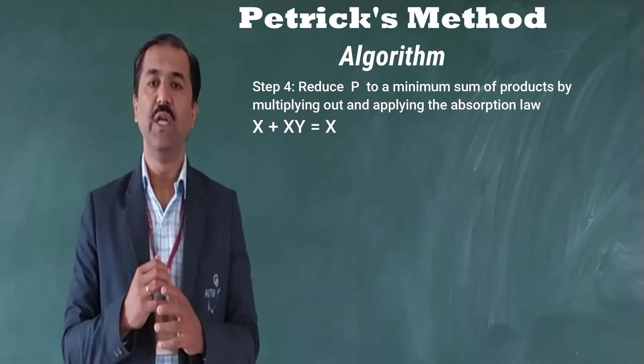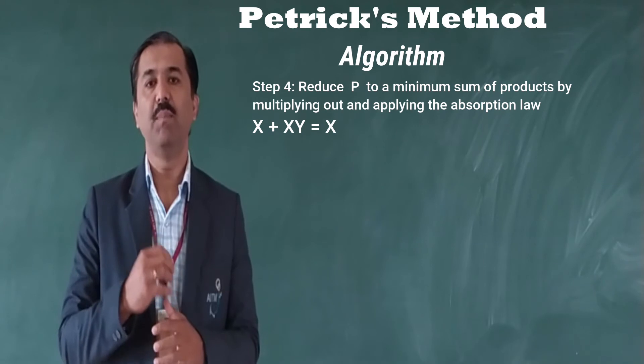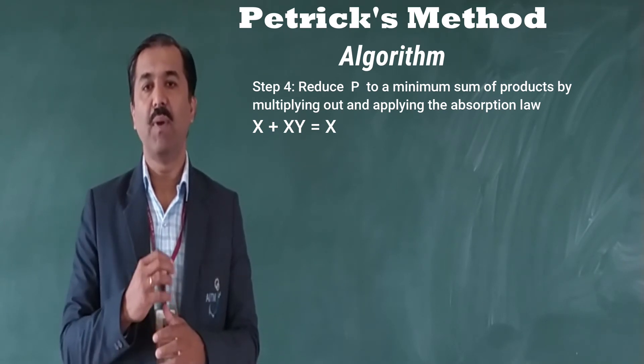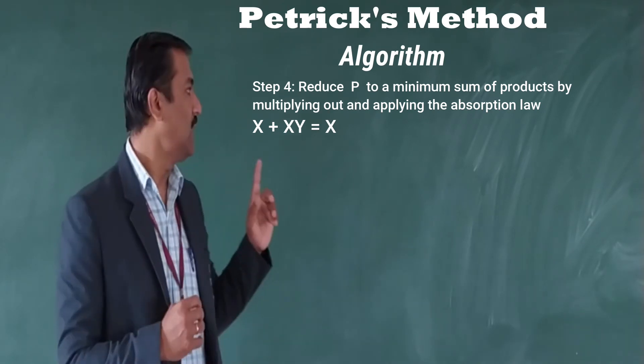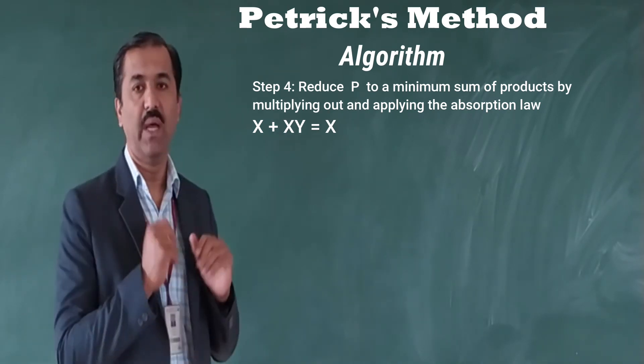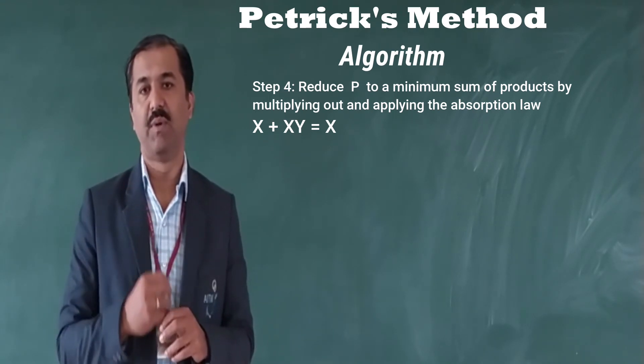Step number 4 talks about reducing P to a minimum sum of products by multiplying out and applying the absorption law which is X + XY = X. This law you must have discussed in your boolean algebra.